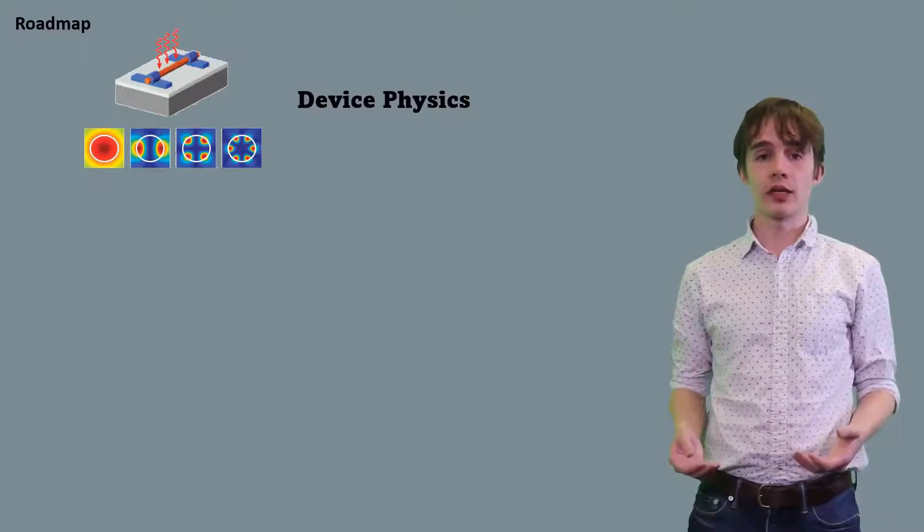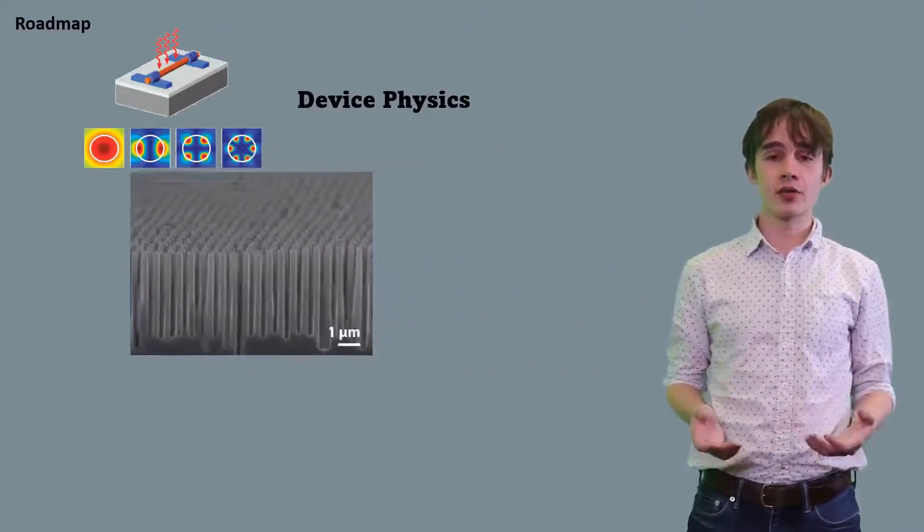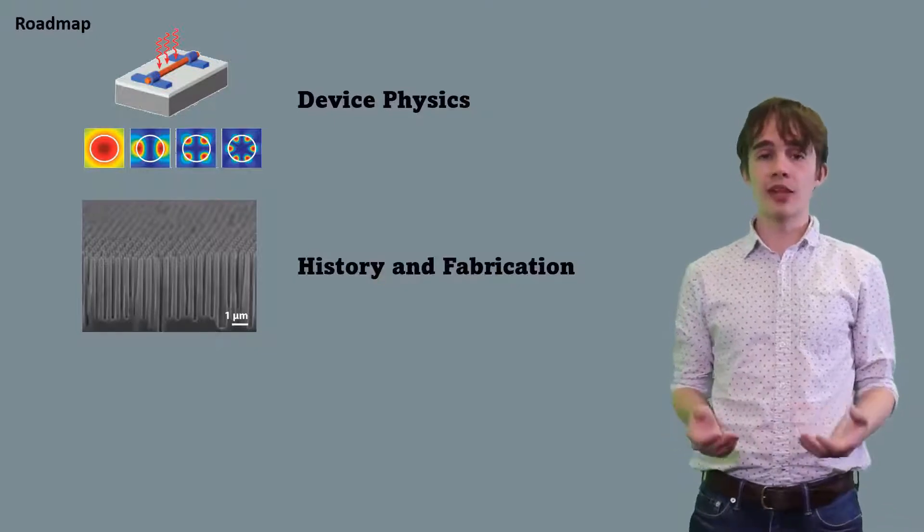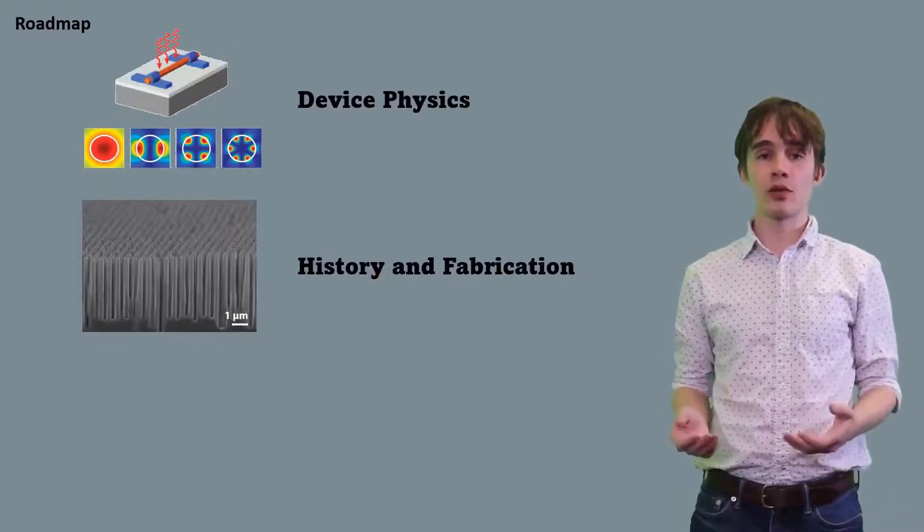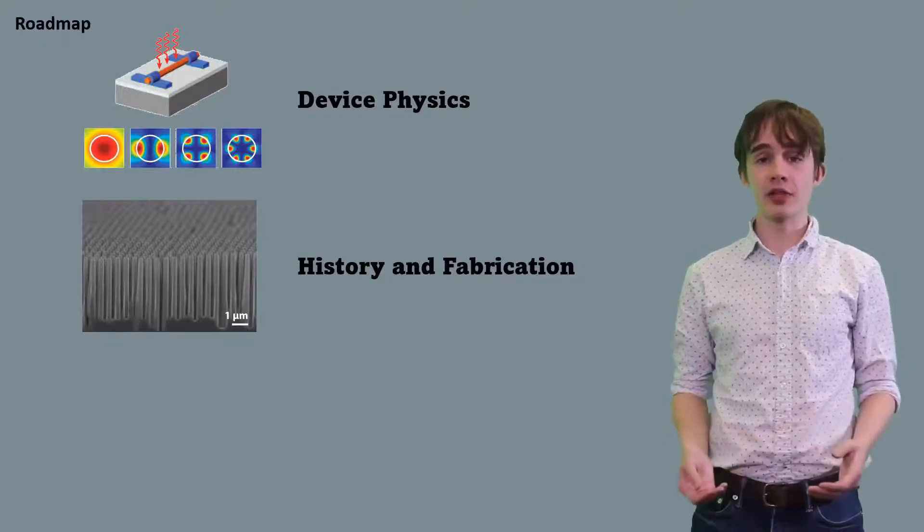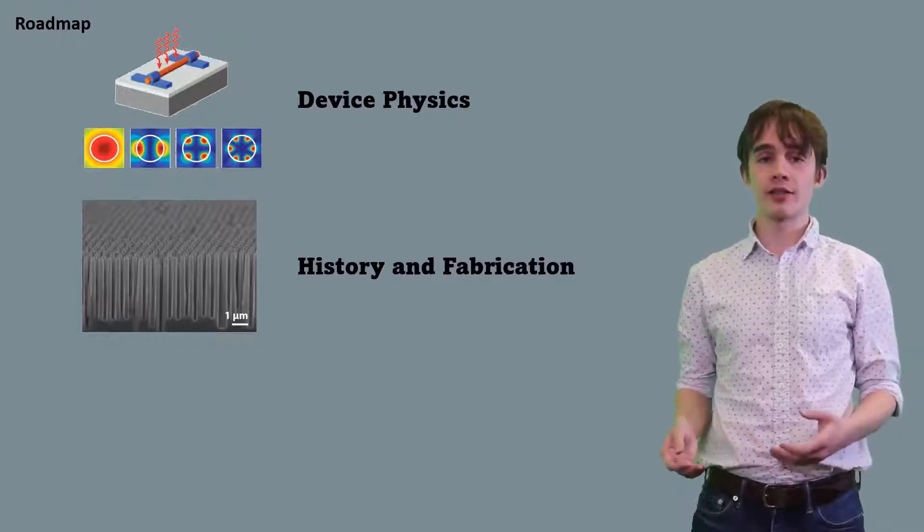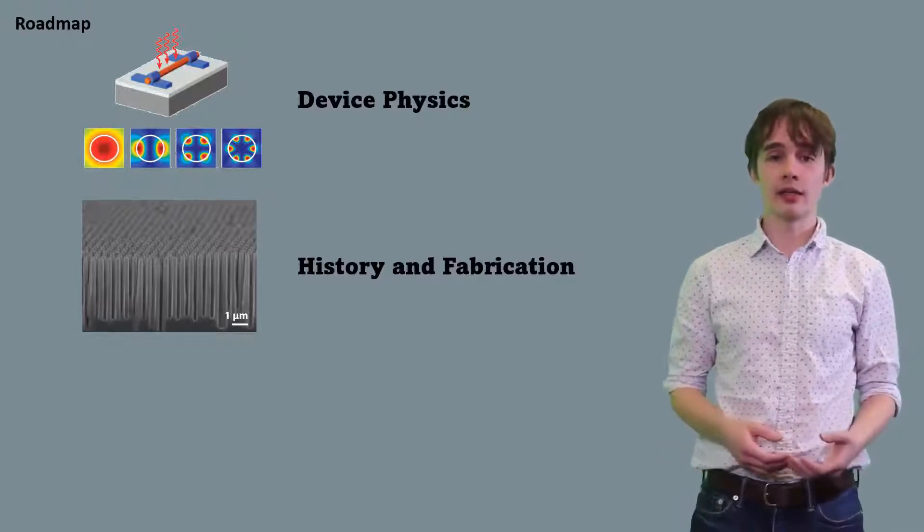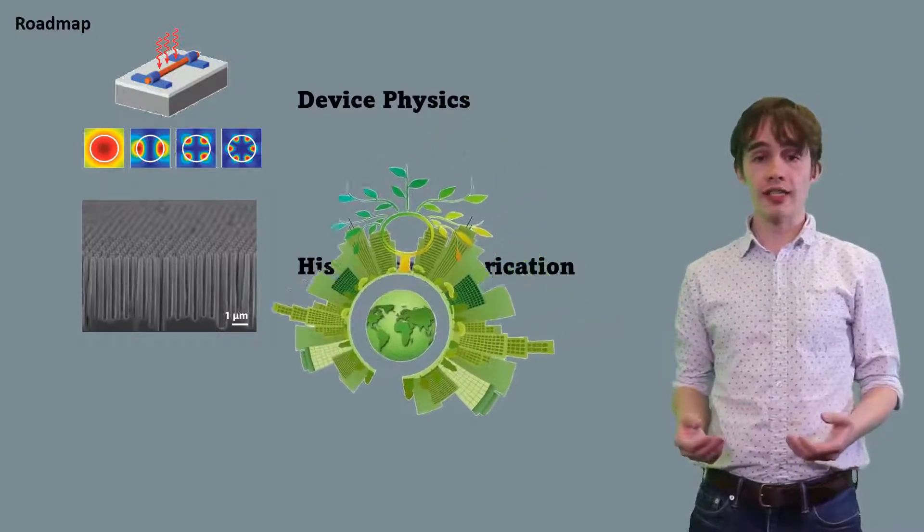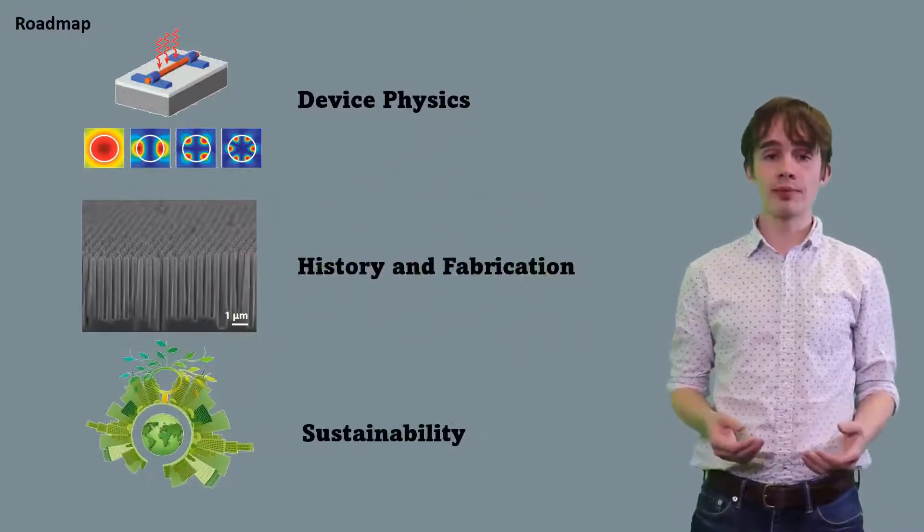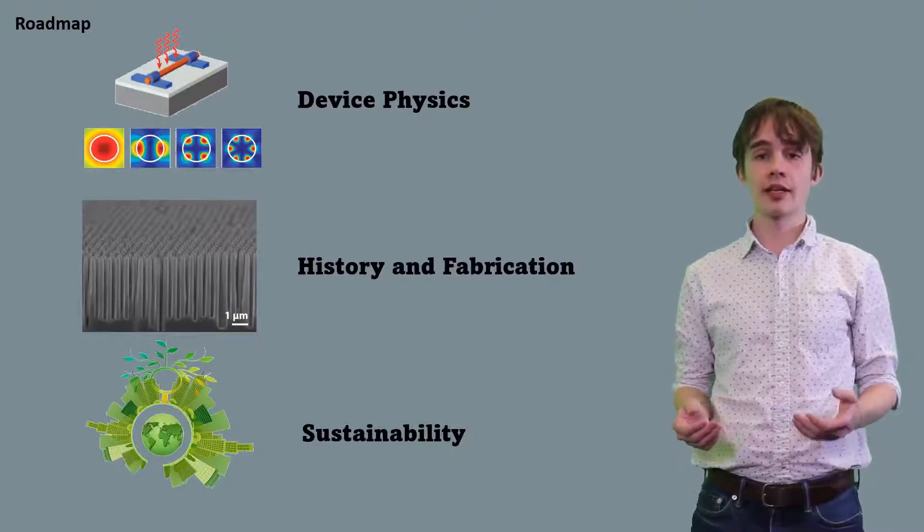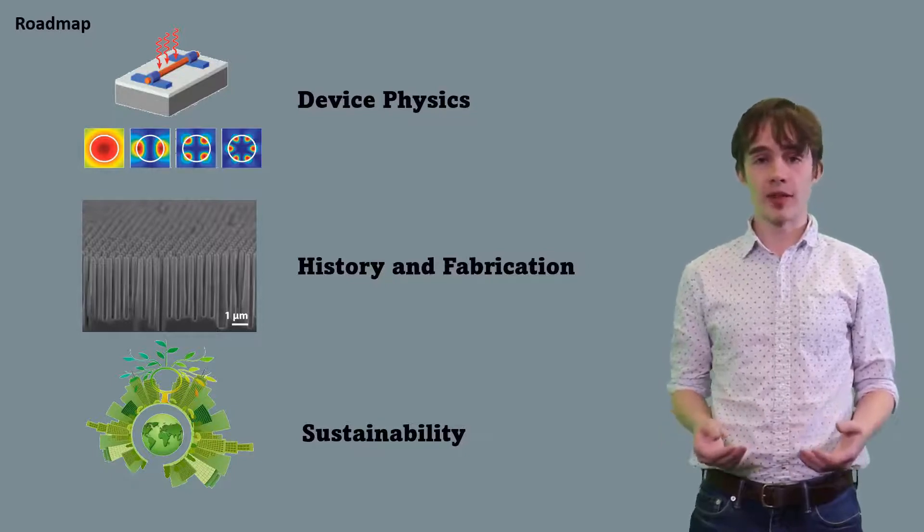Next is history. The history of nanowire solar cells is the history of nanofabrication, so in this section, we'll cover the main nanowire synthesis processes and how they've changed over the years. We'll also discuss some benchmark devices and experimental results in different time periods to give context to the research that's happening today. Finally, we'll talk about sustainability. Could these devices help us achieve cheap, clean energy for everyone? We'll discuss the potential impacts of nanowire photovoltaics from social, environmental and economic perspectives.